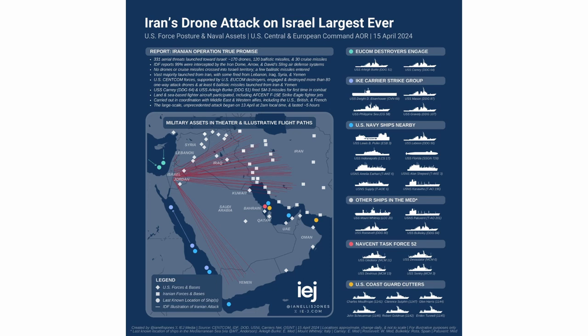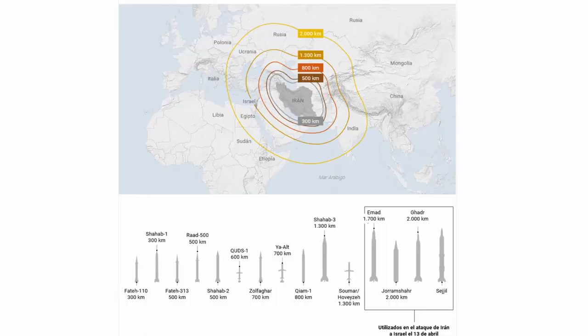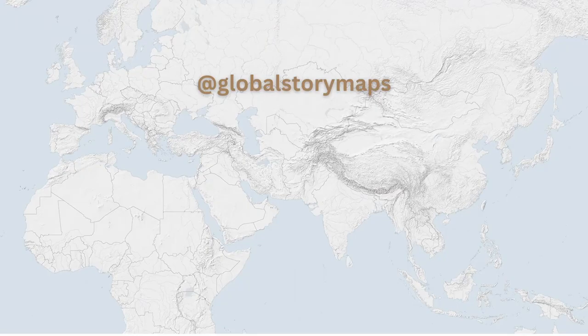Finally, we have this graphic, which is very interesting because it shows the attack, the number of drones, the missiles, and the cruise missiles launched, the interception, the Iranian bases, and the U.S. and other ships that were part of this operation. As we continue watching the news, we are now in a moment where we know that both countries and all the countries in the region are engaged in some kind of cyber war, some kind of activity in cyberspace, and we use this technology to share with you the news related to this attack.